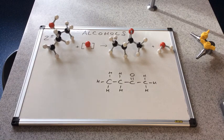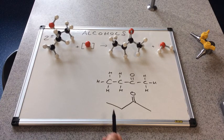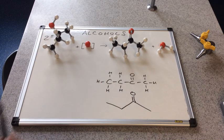There's the displayed formula for butanone or butan-2-one. And there's the skeletal formula: CH3, CH2, C double bond O, CH3.